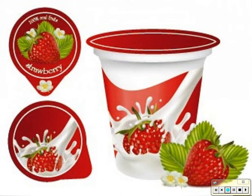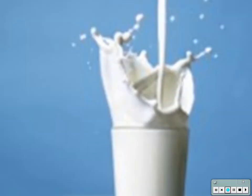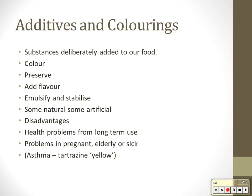We also use microorganisms for making breads. Mycoprotein is a fungus-based food that vegans can eat instead of meat. Additives and coloring are added to food to change the flavor, color, make it last longer, or to emulsify and stabilize it. The advantages are that it makes food taste better, last longer, and look better. The downside is not all additives are natural — some are artificial and can cause health problems, specifically asthma-related issues and problems for the elderly or sick.